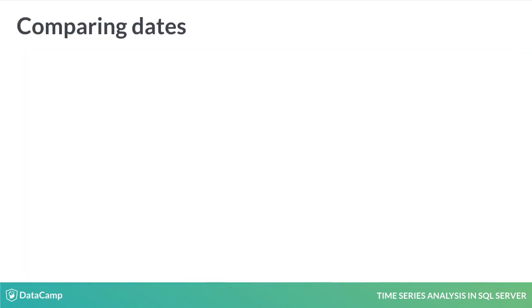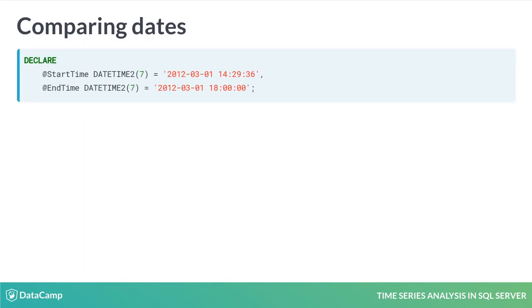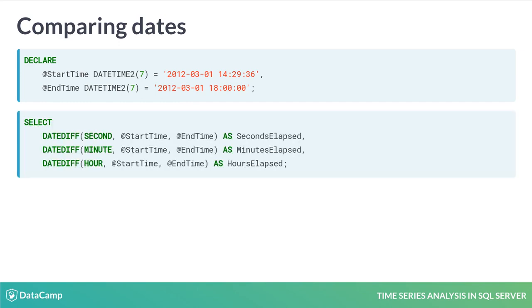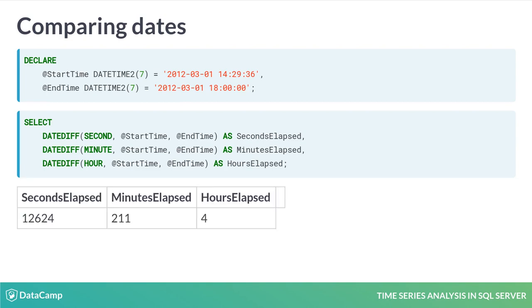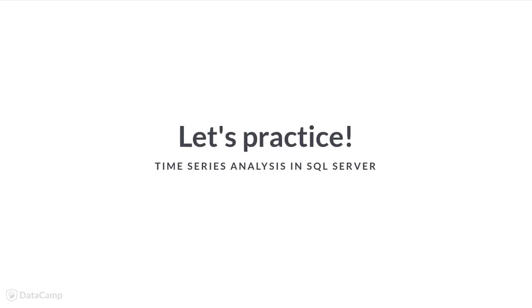The DateDiff function allows us to compare the number of units of time between two date or time types. For example, suppose we have a start and end time for a machine — we can easily determine the number of seconds, minutes, or hours elapsed. Be warned that DateDiff returns an integer and rounds up. Now that we've seen some of the basics of handling date parts, let's jump into a few exercises.